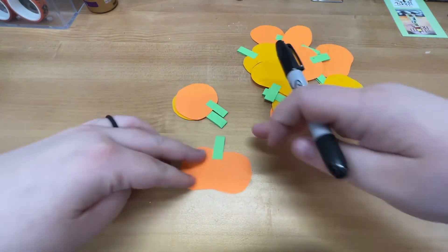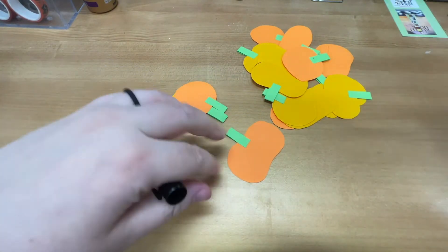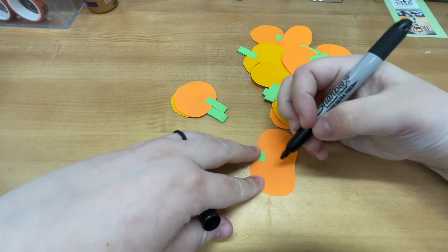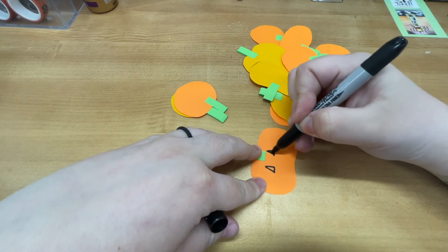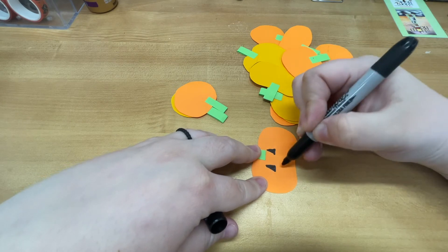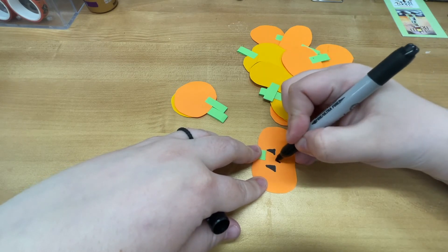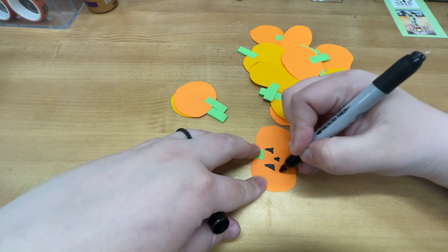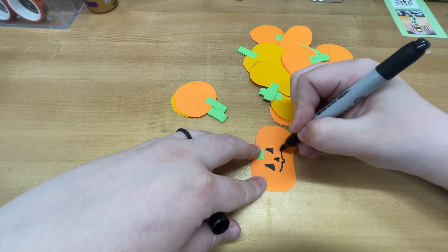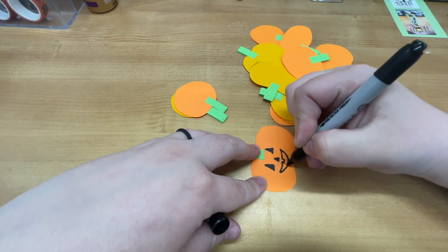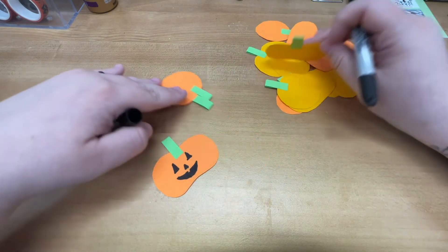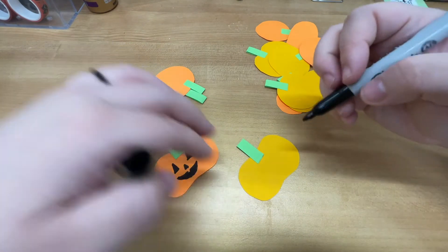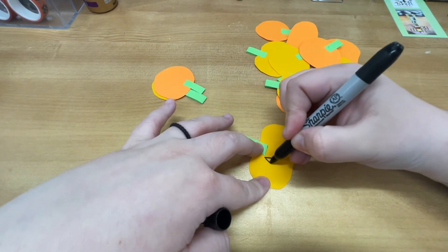Once you have your pumpkins all stemmed up, this is when you get to make your fun faces. Because there's two different colors, I like to make a pattern. I like to maybe do one little face on one. So like I'll do a happy face. And then maybe on like my more yellowy looking one, I'll do a scared face.